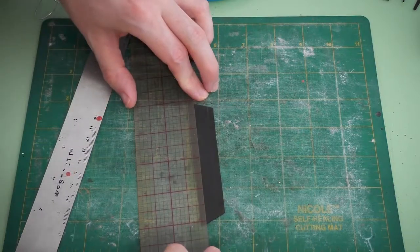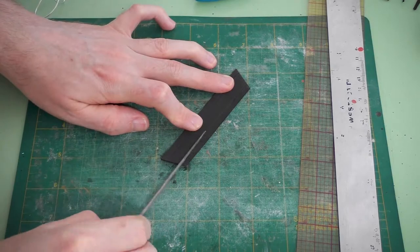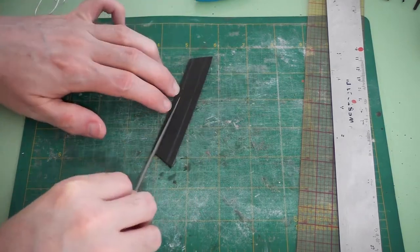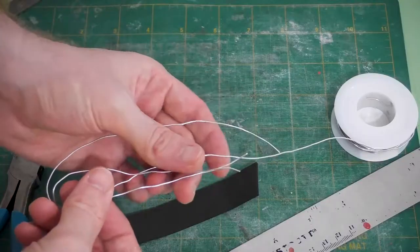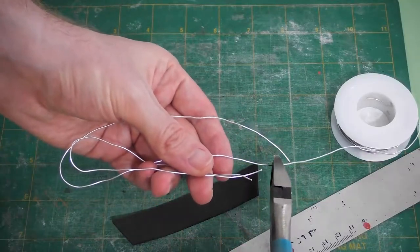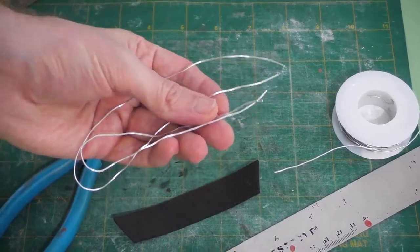Now we'll draw a line close to the top and bottom of it. Next we'll take a thin file and follow those lines, creating tiny grooves. Then we'll take some 20 gauge wire, measure it to be about the length of our foam piece, and twist that up.